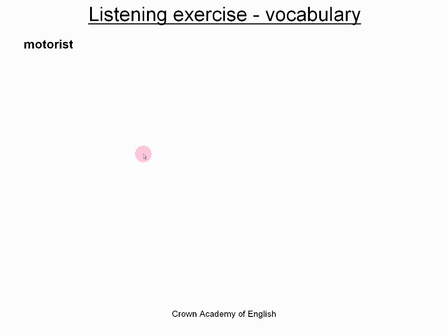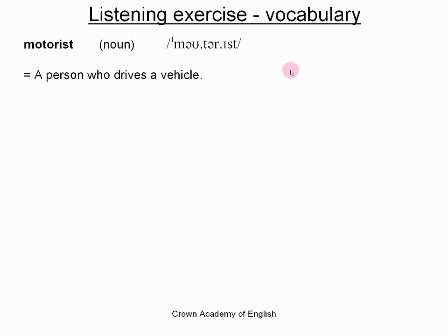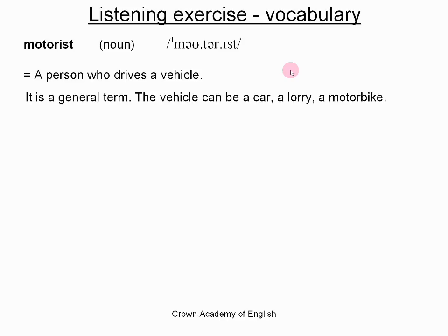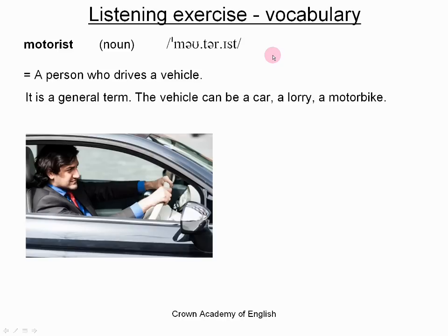The second word is 'motorist'. This is also a noun. A motorist is a person who drives a vehicle — another word perhaps for driver. It is a general term, meaning the vehicle can be a car, maybe a lorry, a motorbike or a van. So it's the driver of any vehicle. Here is a motorist driving to work.